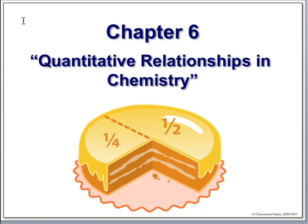Today we're going to do Chapter 6: Quantitative Relations in Chemistry. This chapter begins the trend of the course toward quantitative things — Chapters 6, 7, 8, and 9 are all very highly quantitative. Here we're going to talk about chemical equations and stoichiometry, and how we can use these to predict how much of a given product we should expect.